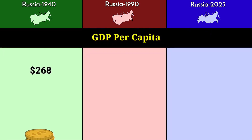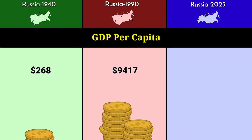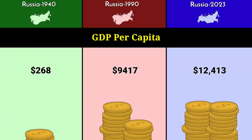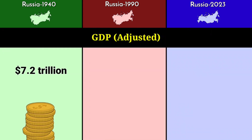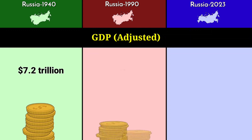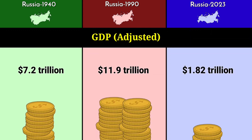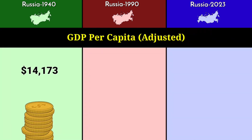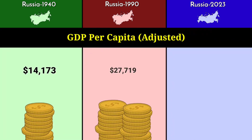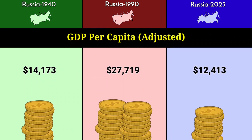GDP per capita: 268 dollars in 1940, 9,417 dollars in 1990, and 12,413 dollars in 2023. GDP PPP-adjusted value: 7.2 trillion dollars in 1940, 11.9 trillion dollars in 1990, and 1.82 trillion dollars in 2023. GDP per capita PPP-adjusted: 14,173 dollars, 27,719 dollars, and 12,413 dollars.